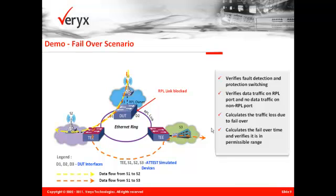Next, the ring protection link owner detects a local signal failure on its link and unblocks the ring protection link. ADDIST stops sending the periodic CCM messages to simulate this failure condition. The device under test detects this failure after the lapse of 3.5 times the CCM interval, and then starts forwarding the traffic flows from S1 to S2 and S1 to S3 on its ring protection link.